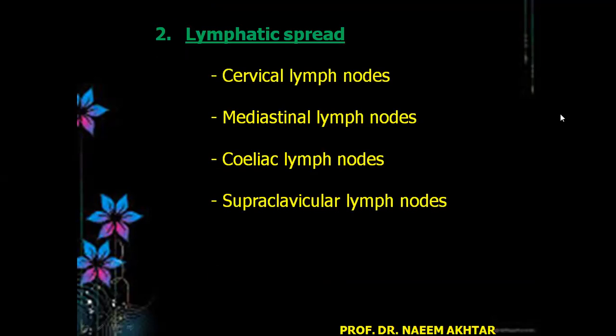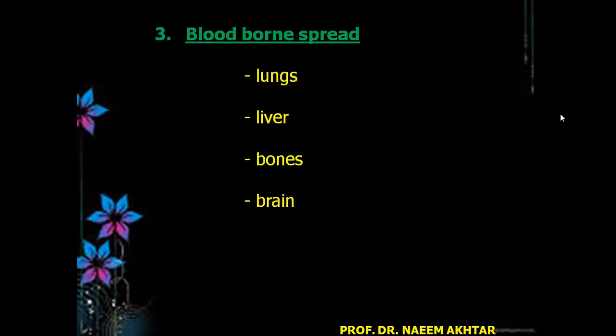Lymphatic spread: carcinoma of the esophagus may spread through the lymphatics to the cervical lymph nodes, mediastinal lymph nodes, celiac lymph nodes, and supraclavicular lymph nodes. The third mode of spread is blood-borne spread — it may involve veins and capillaries and may spread to the lungs, liver, bones, and brain.